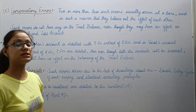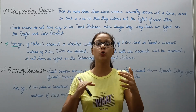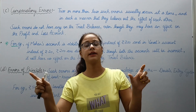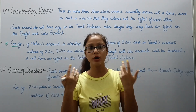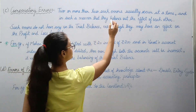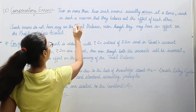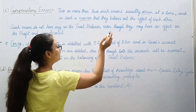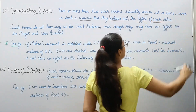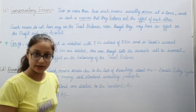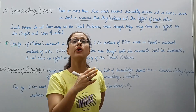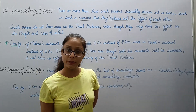Compensatory errors — what are they? In this, there will be two or more errors. The effect of one error gets compensated by the effect of another error, and ultimately there is no significant impact. Two or more errors occur together, and the effects of both errors compensate each other, so ultimately no big impact is seen.